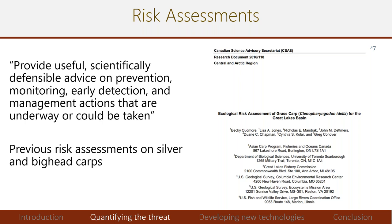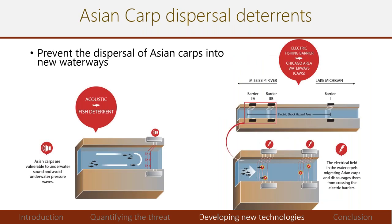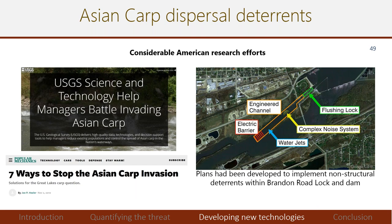In addition to quantifying the threat, Canada has been developing new technologies to deter Asian carp from entering the Great Lakes. Canada has been working with the United States evaluating new technologies for managers. An example was the development of plans to implement a non-structural deterrent system at Brandon Road Lock and Dam, using multi-modal deterrents including an electric barrier, water jets, complex noise, and flushing to prevent further dispersal. However, plans for this have been placed on hold.